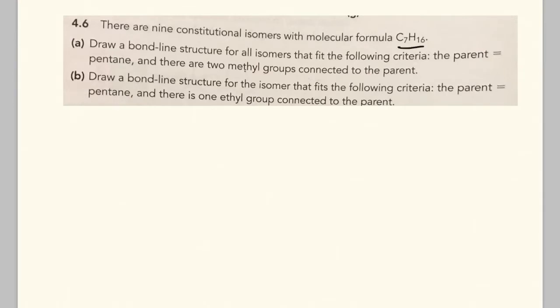So here we have this formula C7H16 and it says draw a bond line structure for all isomers that fit the following criteria. The parent chain is pentane and then there's two methyl groups connected to the parent chain.